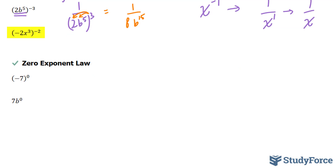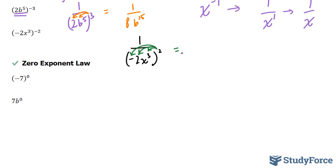Next: negative 2x to the power of 3, all to the power of negative 2. We write it as 1 over negative 2x to the power of 3, and our exponent goes positive 2. We distribute this 2 to all components — note that the negative actually means negative 1, so we distribute the 2 to that negative 1, to the 2, and to x to the power of 3. This gives us negative 1 to the power of 2, which is 1; 2 to the power of 2, which is 4; and x to the power of 3 to the power of 2, which is x to the power of 6. The final answer is 1 over 4x to the power of 6.